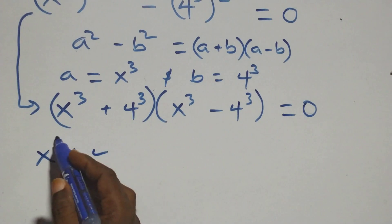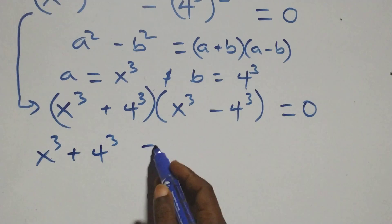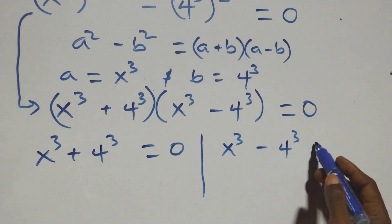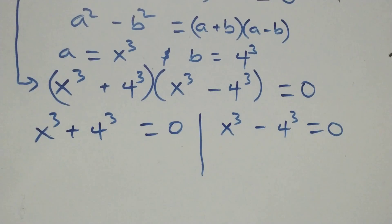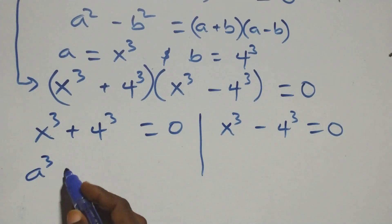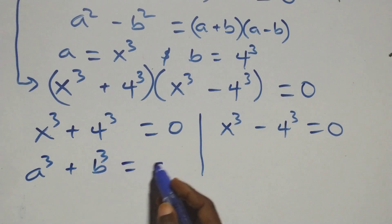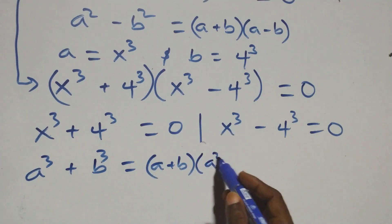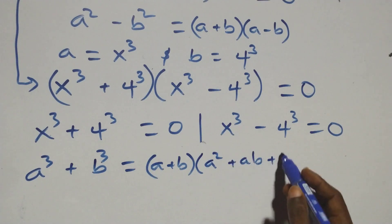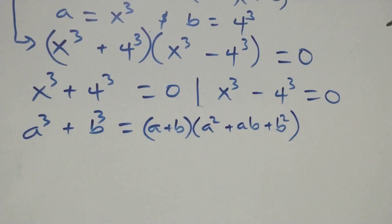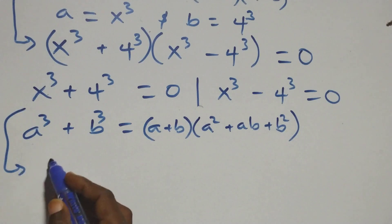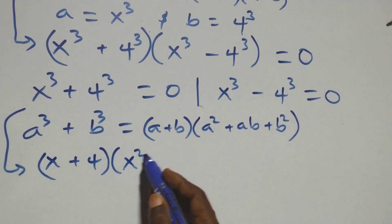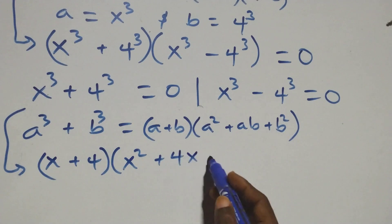Then here we have two possible cases. First: x raised to power 3 plus 4 raised to power 3 equals to 0, or we have x raised to power 3 minus 4 raised to power 3 equals to 0. Solving the first case, we apply the identity a raised to power 3 plus b raised to power 3, which is the same thing as a plus b into open bracket a squared plus ab plus b squared. That is, this becomes x plus 4 into open brackets x squared plus 4x plus 4 squared.